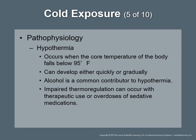Pathophysiology: hypothermia occurs when the core body temperature falls below 95 degrees Fahrenheit. The body cannot regulate its temperature and generate body heat; it normally constricts blood vessels in the skin. Many body functions begin to slow as cold exposure continues — it can develop quickly or gradually. The temperature does not have to be below freezing for hypothermia to occur. It is more common among geriatric, pediatric, and ill populations. Alcohol is a common contributor, and impaired thermoregulation can occur with sedative medications.